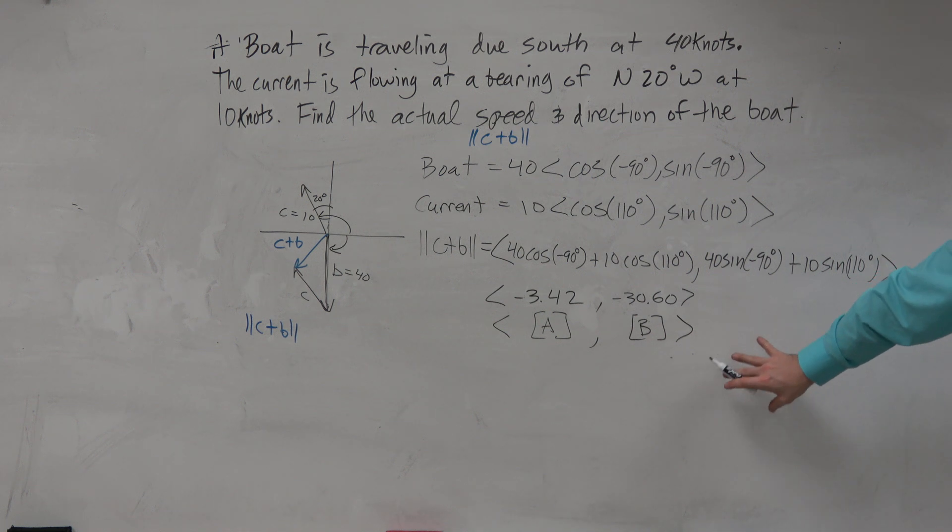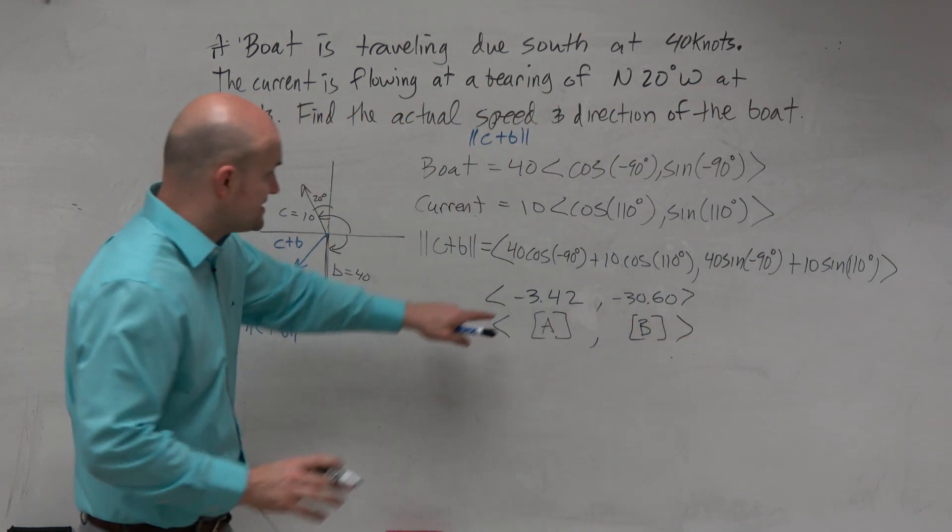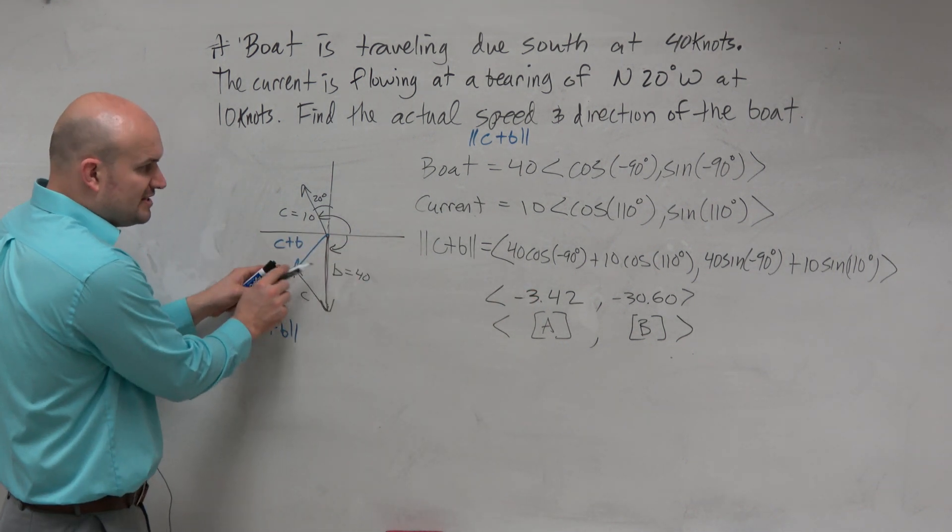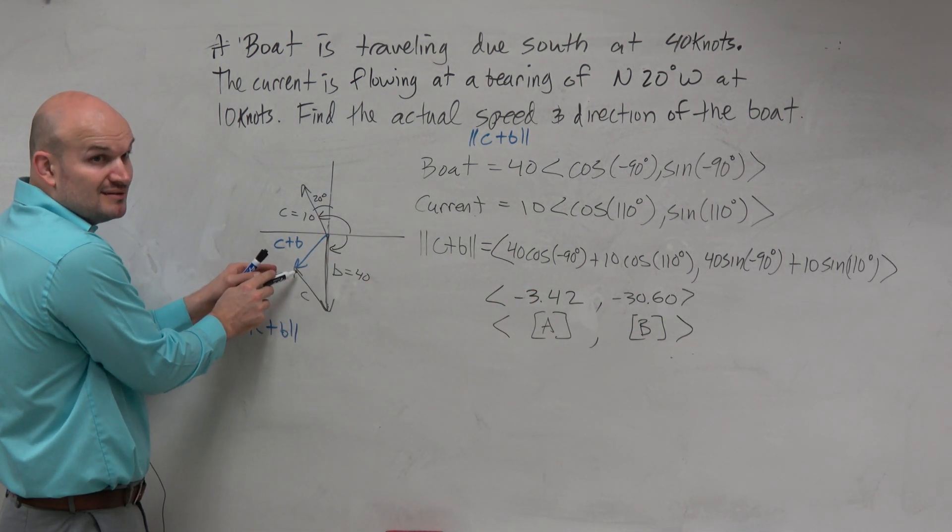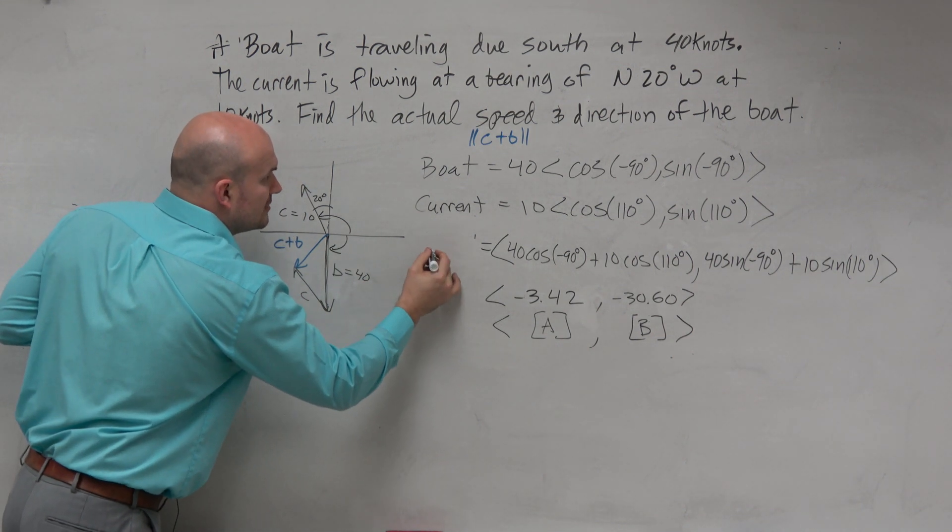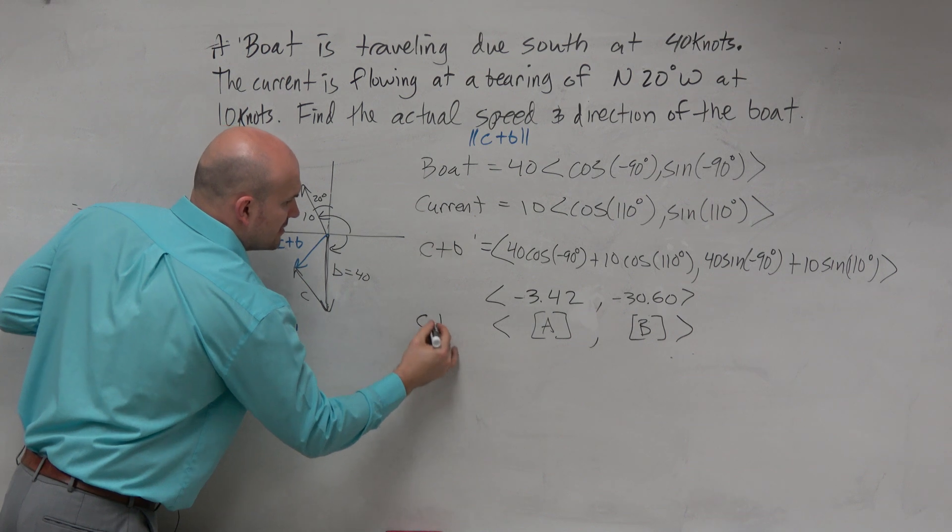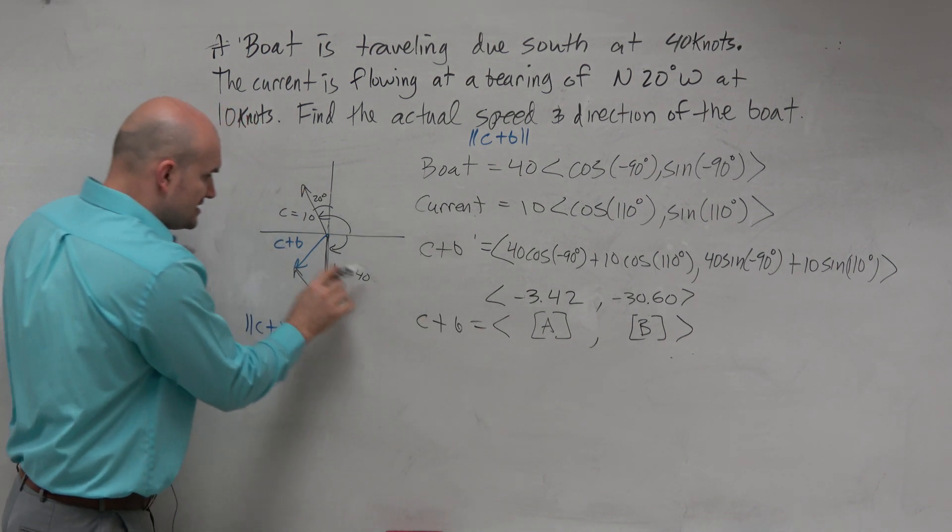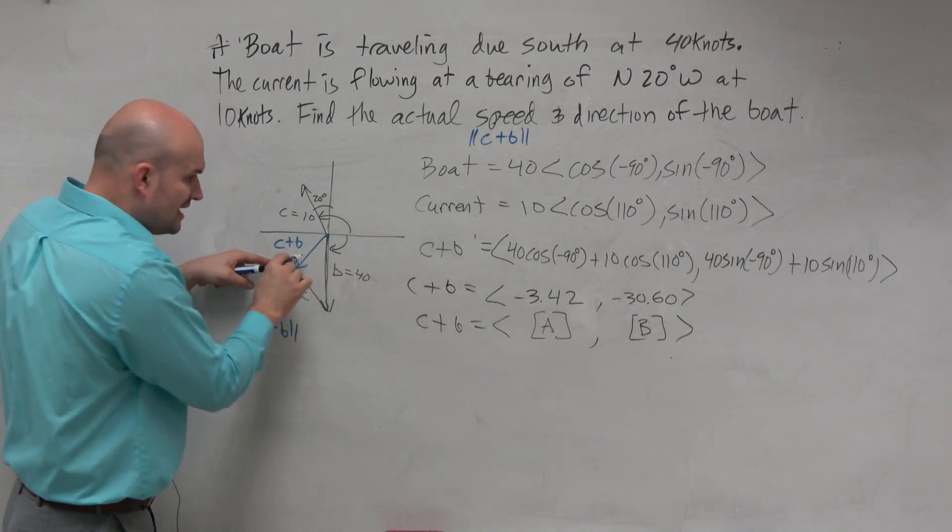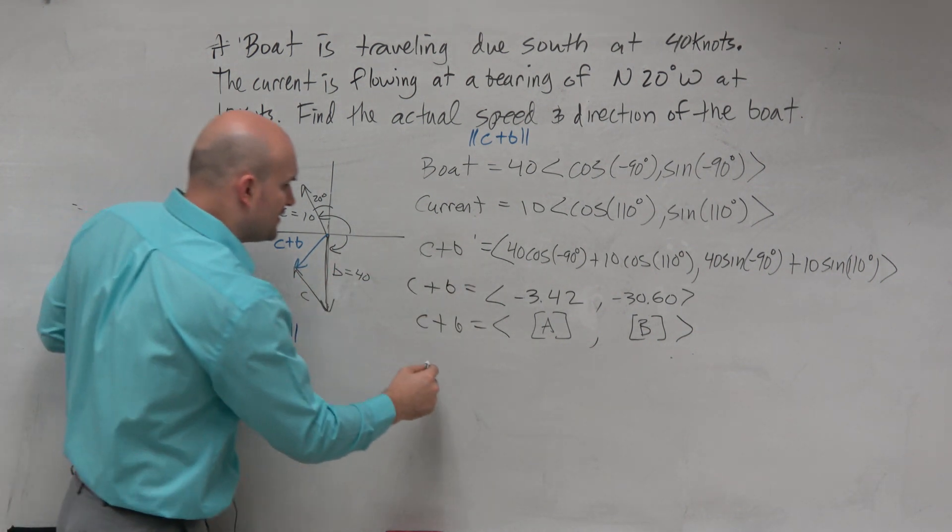Anyways, this is just the resultant vector. Now, first of all, does this vector make sense? Negative 3.42, negative 30.6. Should this vector be in the fourth quadrant? This is your C plus B. Does this make sense? Is this vector in your third quadrant? Yes, it works.